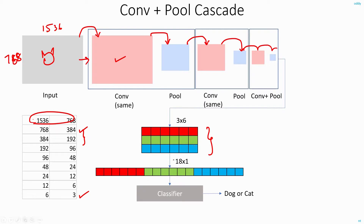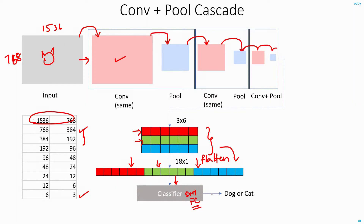Once you get the final output feature map, you flatten it into a one-dimensional array — the first row elements come first, followed by the second row, and finally the last row. This becomes a big feature vector, which is given as input to a classifier such as an SVM or a fully connected layer. The classifier will then tell you whether the image is of a dog or a cat.